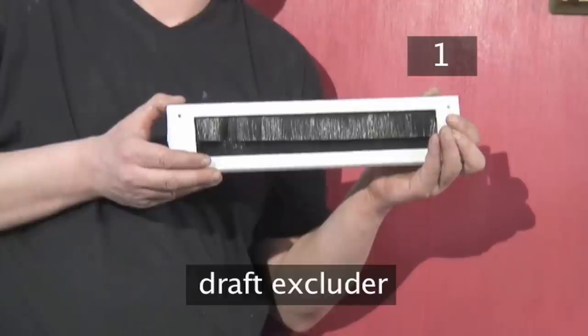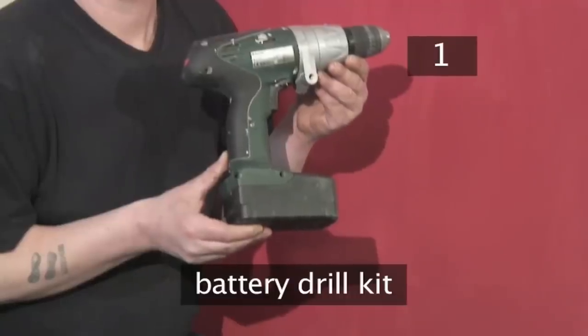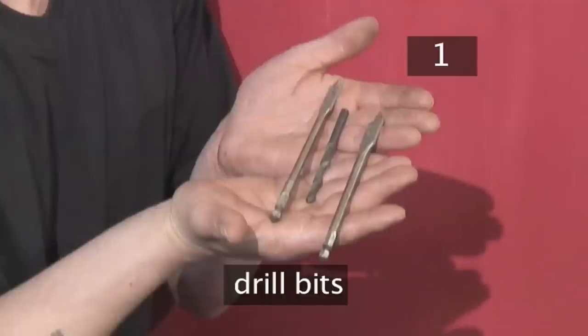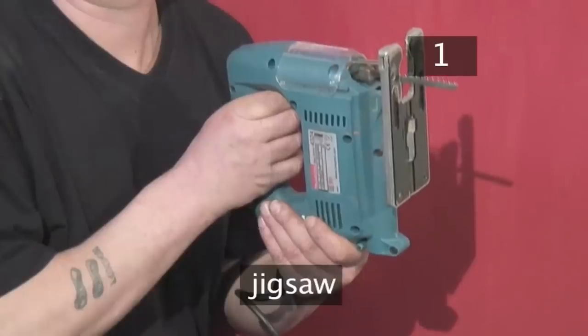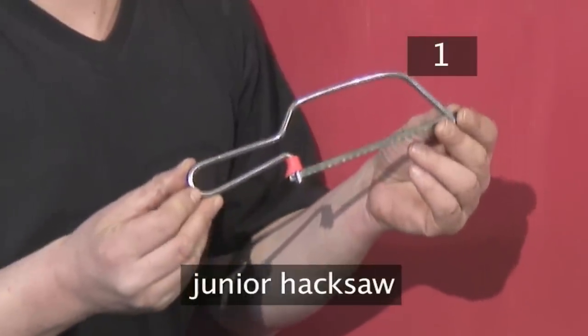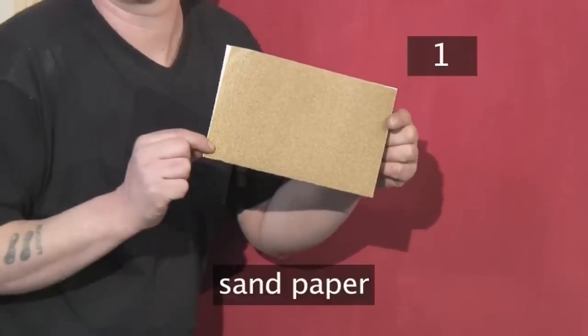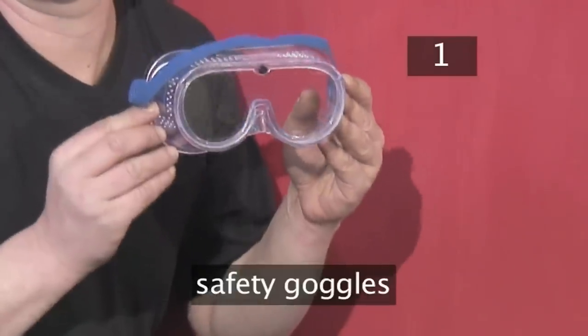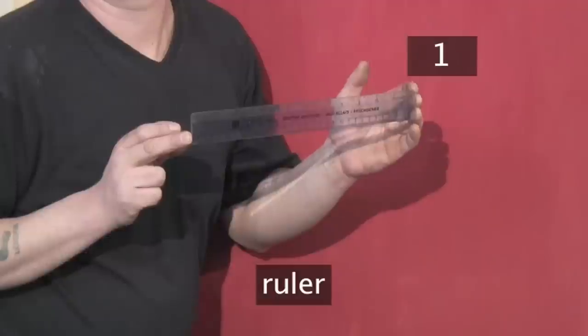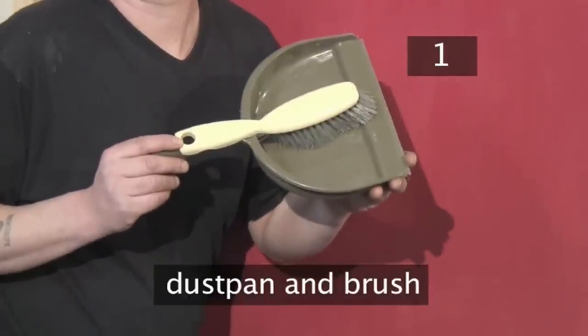A draft excluder. You will also need a battery drill kit, which includes drill bits, a jigsaw, a junior hacksaw, a pencil, a tape measure, sandpaper, safety goggles, a ruler, and a dustpan and brush in case of mess.